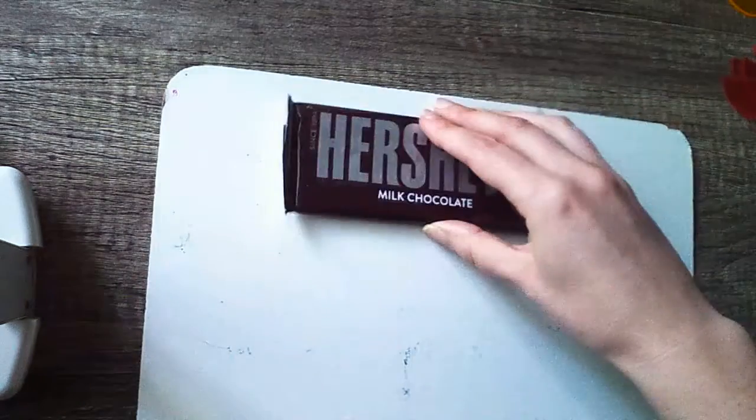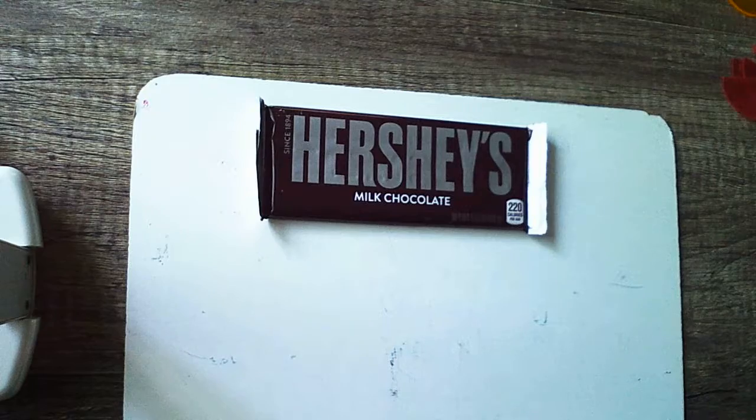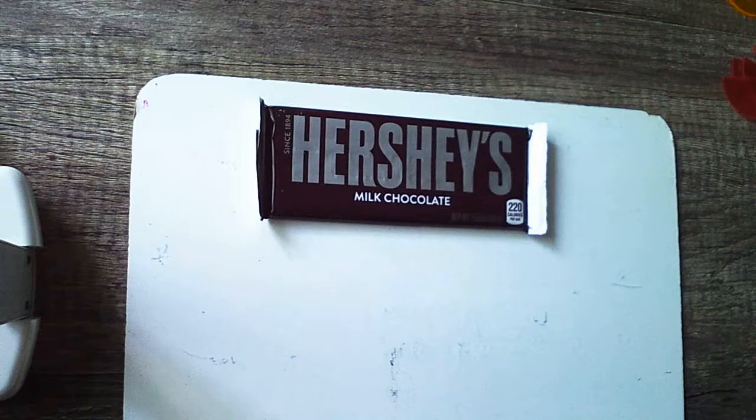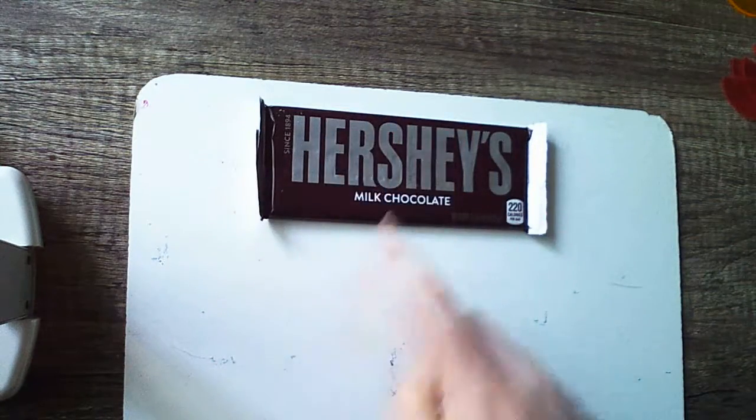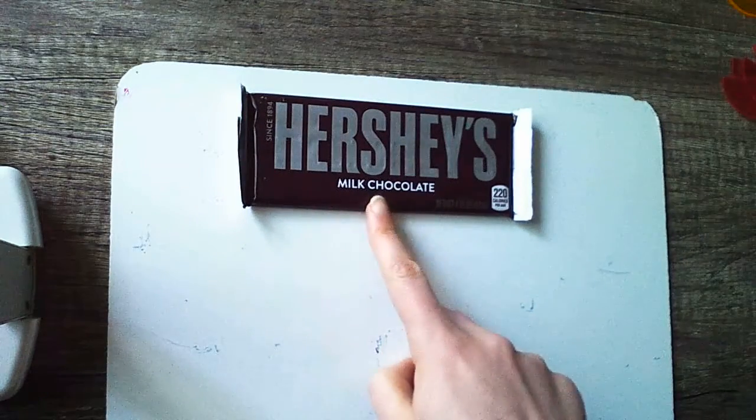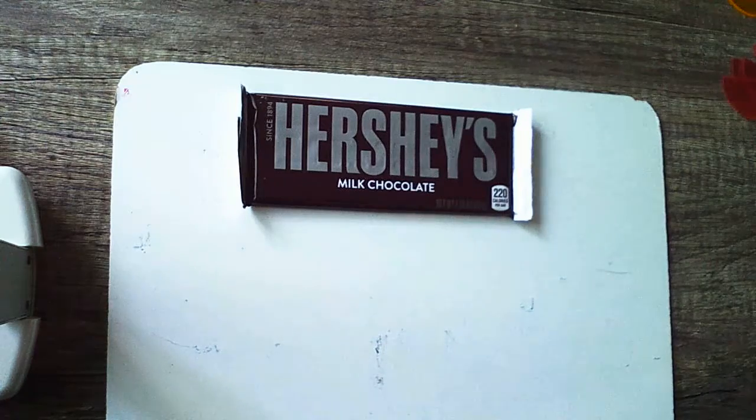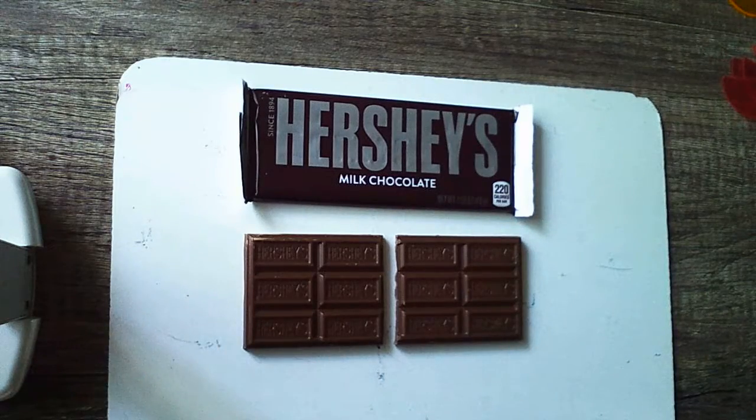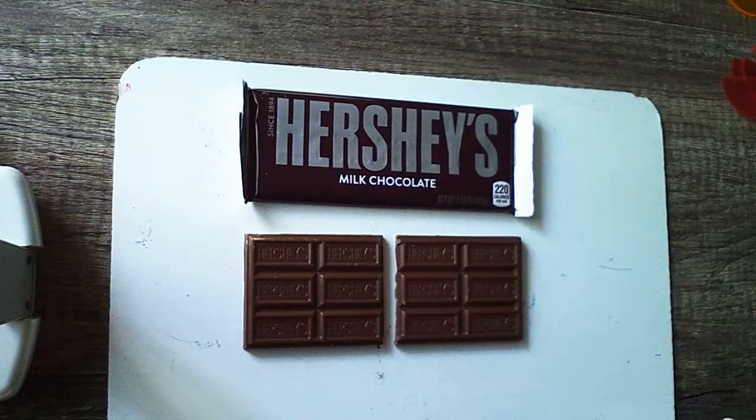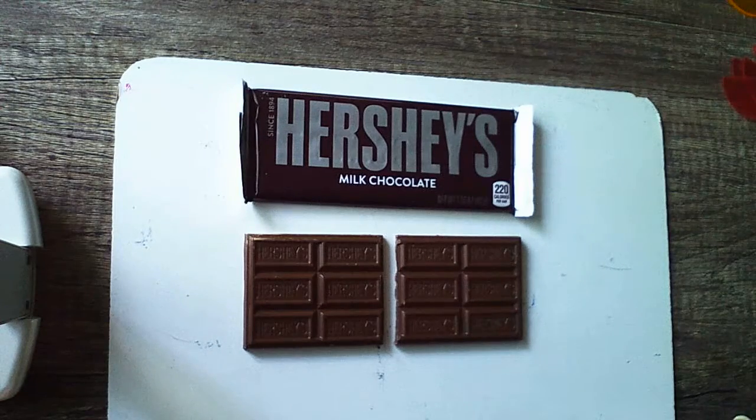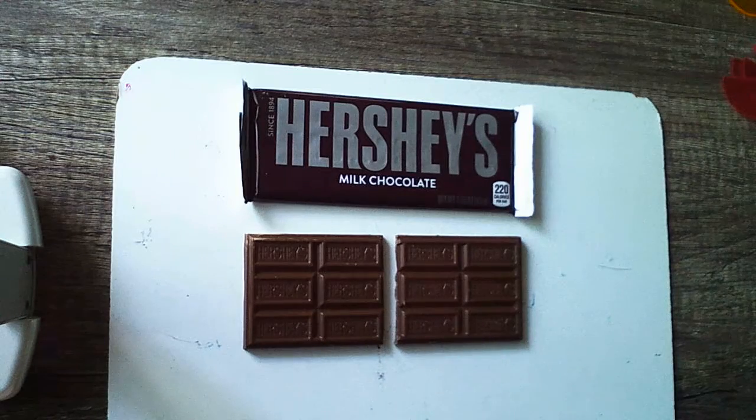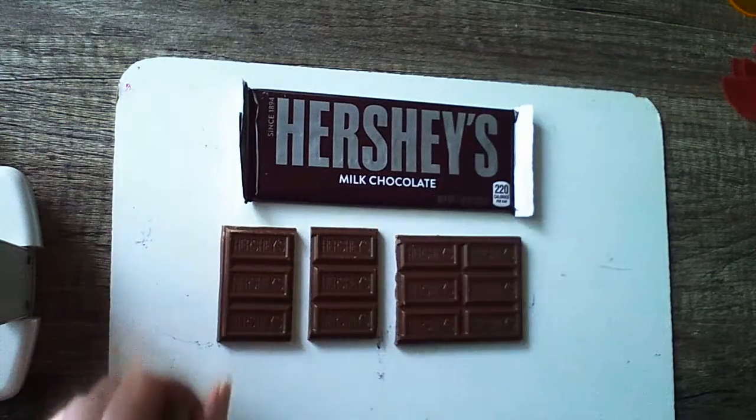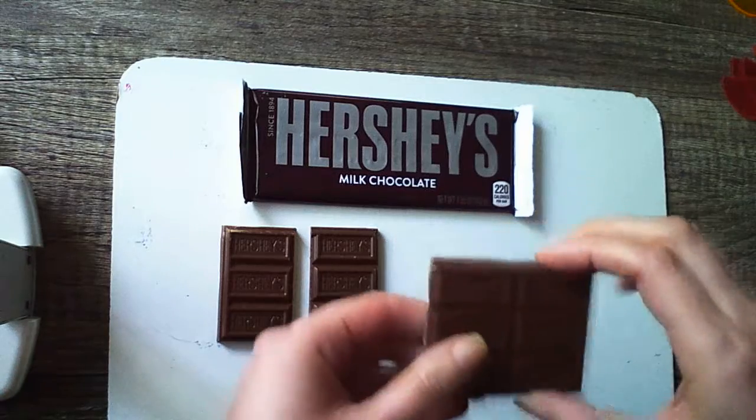When we talked about halves, we said that we break something apart into two equal parts. But today we're talking about quarters and fourths, which means we're gonna have to break something apart into four equal parts. So let's go back to the Hershey bar. Let's say that Samir and I want to share the Hershey bar. Well, that's easy. We would just split it into halves, two equal parts. But maybe we have two friends come over and they want to share the Hershey bar with us also. How are four people going to share two parts?